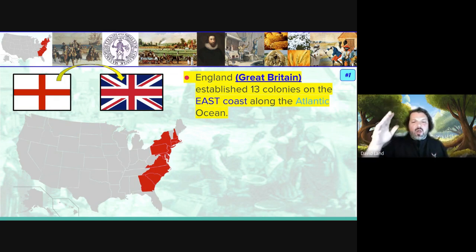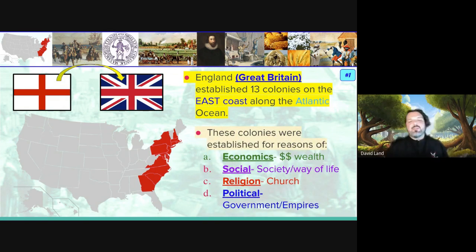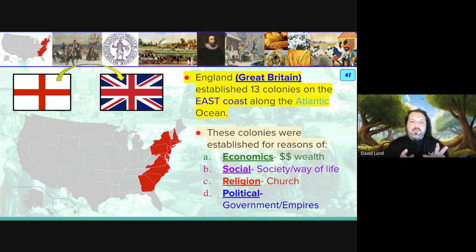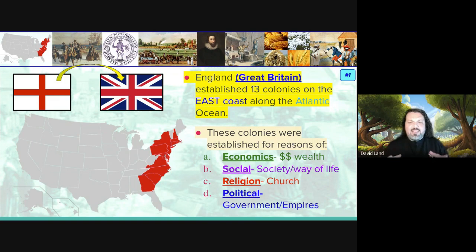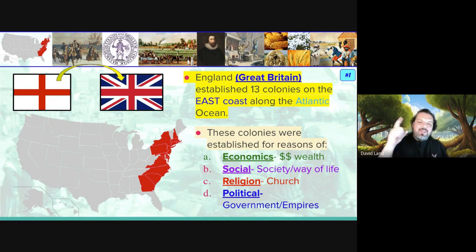The Atlantic Ocean is just off to the east. These colonies were established for different reasons — England had motivations. You remember Gold, God, and Glory from our previous video series. England wanted to grow their empire, so they had economic reasons, social reasons to spread, religious reasons, and political or glory reasons.